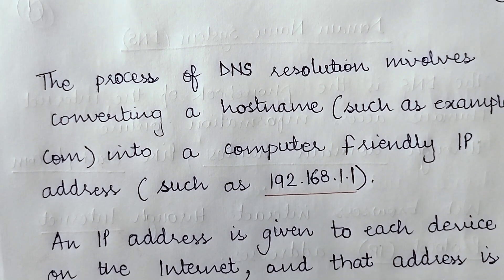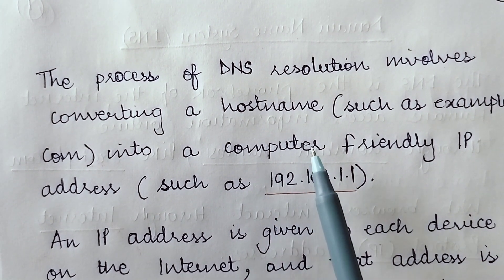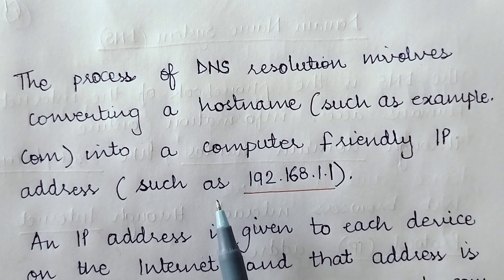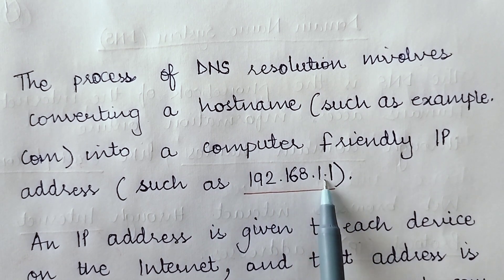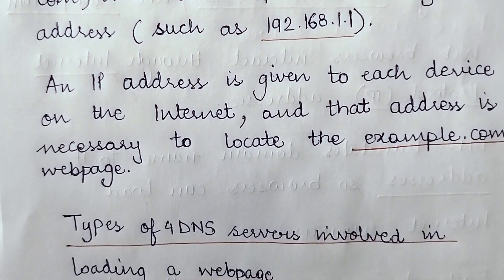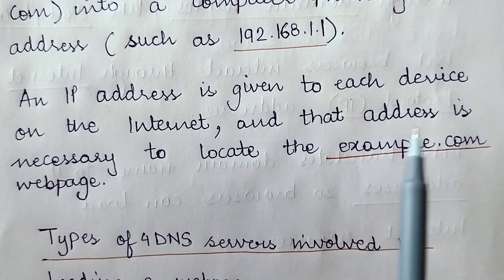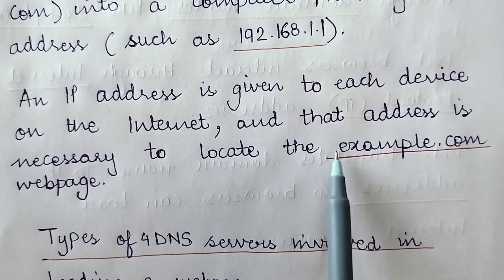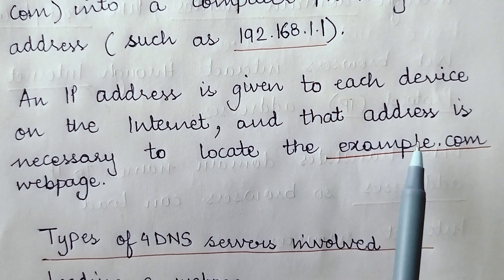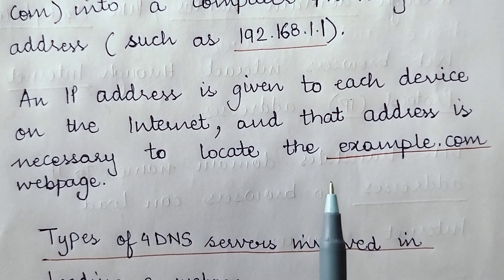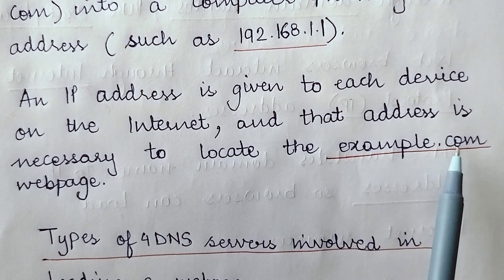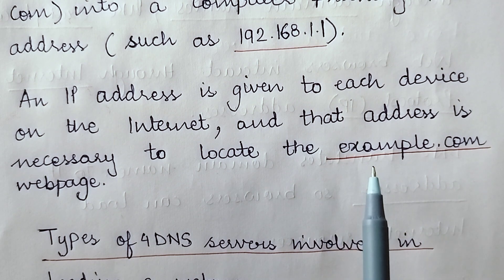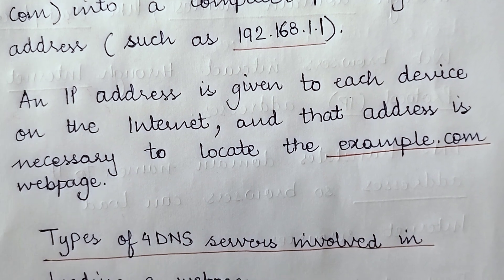The process of DNS resolution involves converting a host name or domain name such as example.com into a computer-friendly IP address such as 192.168.1.1. An IP address is given to each device on the internet and that address is necessary to locate the webpage. When you type www.example.com in your address bar, the domain name system immediately translates it to its respective IP address through which that particular device is identified on the internet.